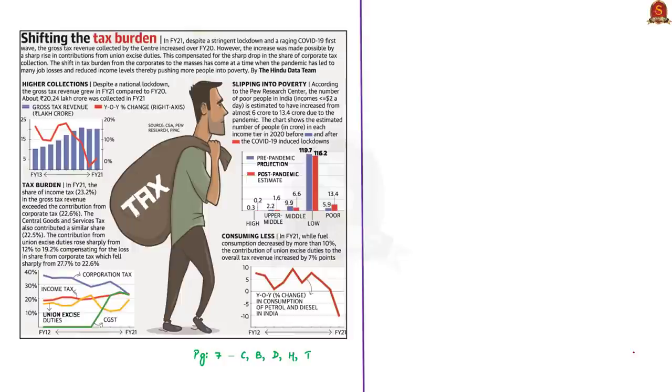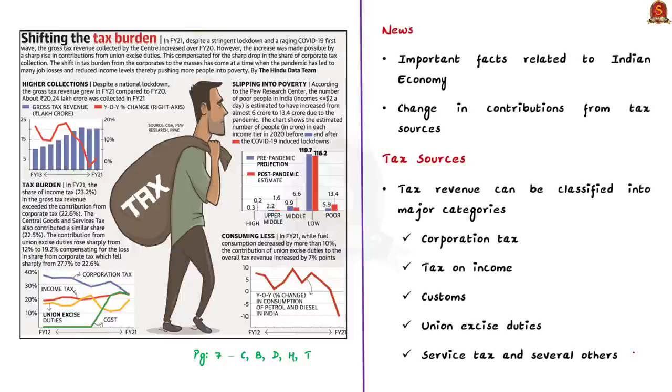In this topic, let us discuss a few important facts related to Indian economy. The data point section in the newspaper has disclosed facts which are very important from prelims perspective. Now, let us see them one by one. The title of the data point is Shifting the Tax Burden. The title highlights the change in contributions from tax sources. First of all, let us know about sources of tax collection. Tax revenue can be classified into major categories such as corporation tax, tax on income, customs tax, union excise duties, service tax and several others.